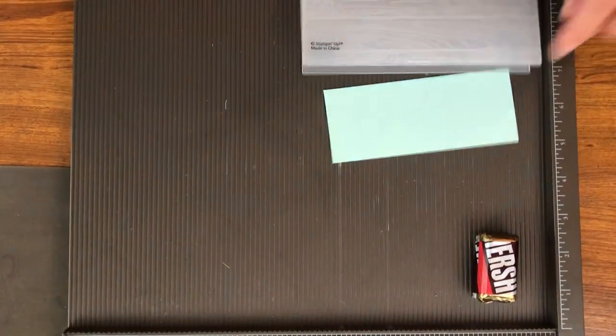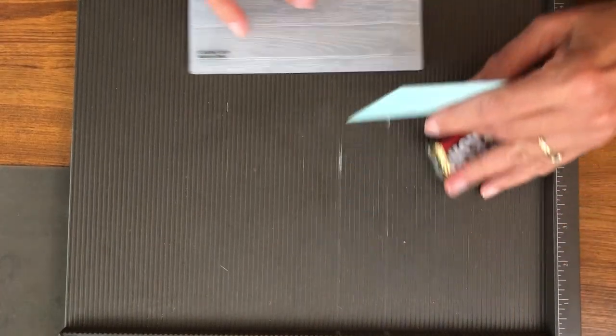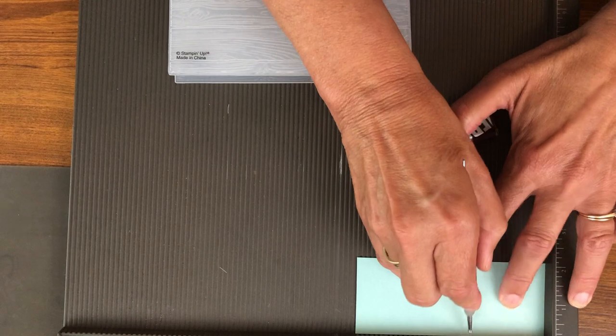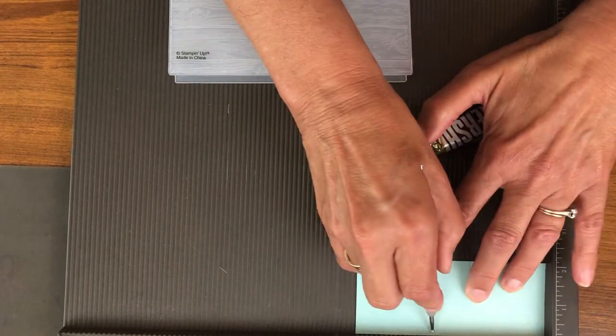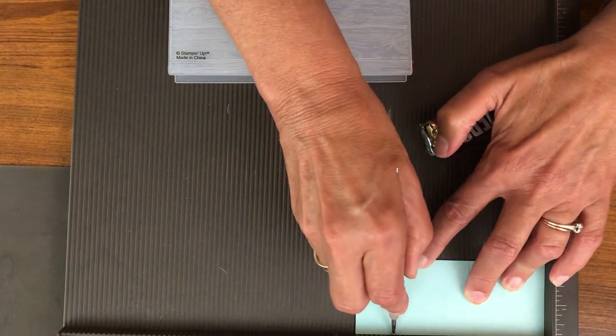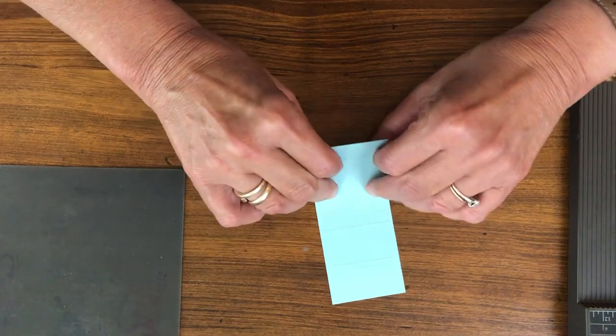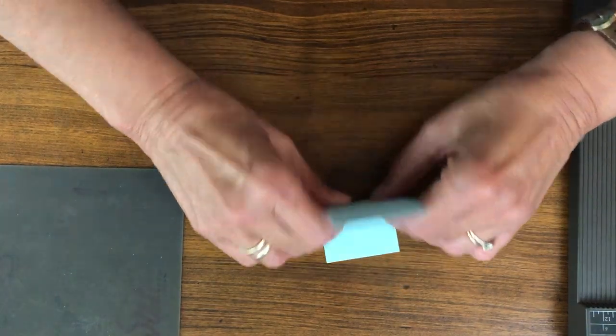Okay, so taking my two inch by five inch piece I'm going to score it at every inch. So one inch, two inch, three inch, four inch, and then I'm going to fold that into a box.